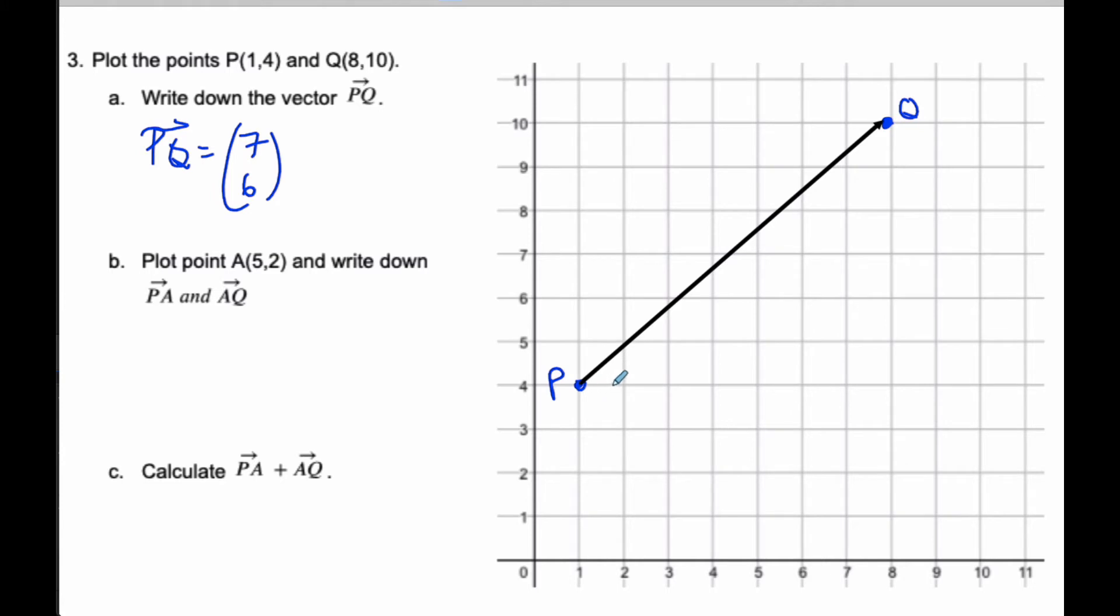And I know if I want PQ, I simply take 8 minus 1 is 7, 10 minus 4 is 6. And visually, if I go 1, 2, 3, 4, 5, 6, 7 in the x direction, and then 1, 2, 3, 4, 5, 6 up in the y direction, we can clearly see that that is the correct vector. So there's PQ.